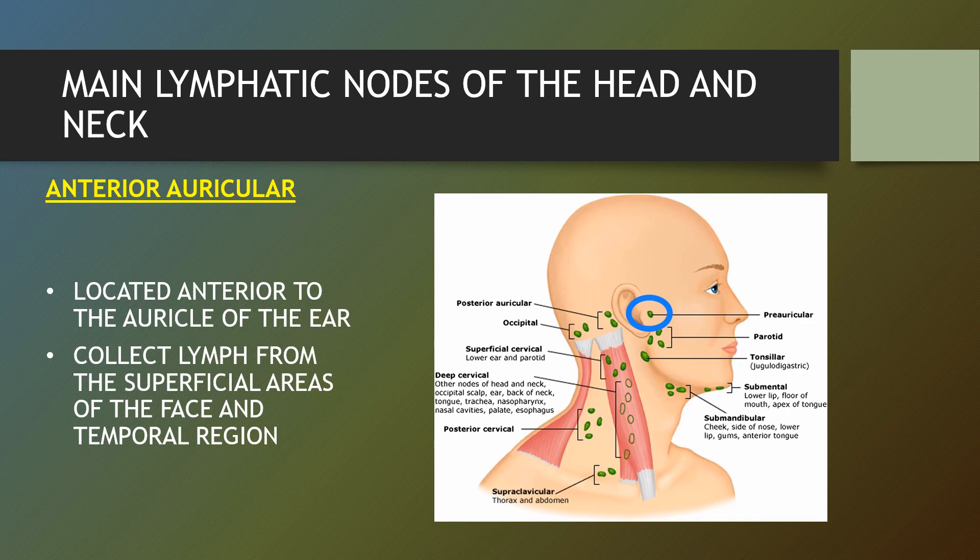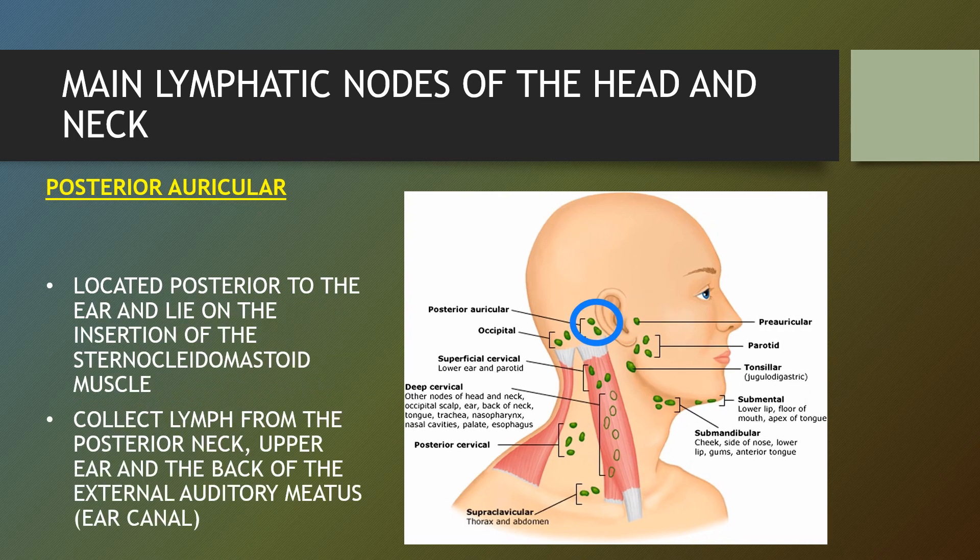Anterior auricular lymph nodes are located just in front of your ears. They drain lymph fluid from the eyes, cheeks and the scalp near your temples. Generally, lymph nodes swell in only one area of the body at a time, and the problem such as infection can usually be found nearby. The lymph nodes behind the ear are called the posterior auricular lymph nodes. A lymph node can swell if exposed to foreign materials. The glands — the lymph nodes on either side of the neck, under the jaw or behind the ears — commonly swell when you have a cold or sore throat, and more serious infections may cause the glands to enlarge and become very firm and tender.